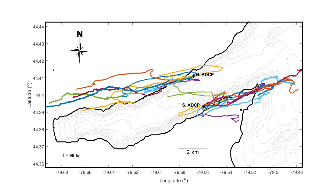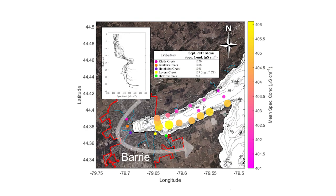Due to the Earth's rotation, as the water masses flow into and out of Kempfield Bay, they curl to the right in the direction of travel, resulting in a counterclockwise residual circulation, further driving exchange with the main basin.